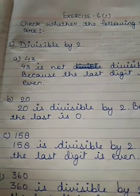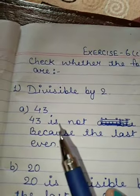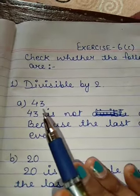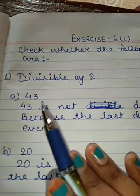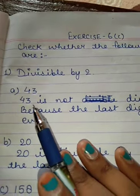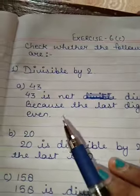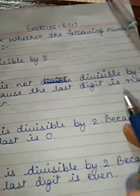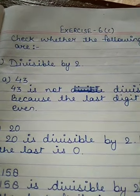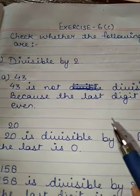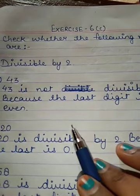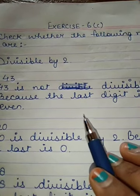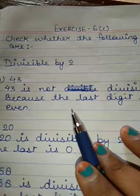Here in this question, the first number is 43. You can see the last digit is 3 — it is not 0, 2, 4, 6, or 8, and it is not an even number. So, 43 is not divisible by 2 because the last digit is not even.